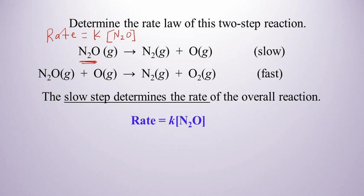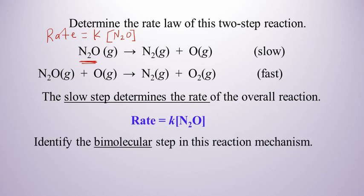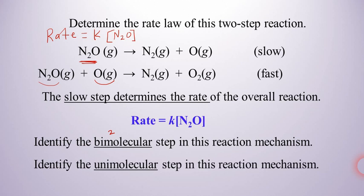As long as you can identify the slow step, you can do this. Now let's identify the bimolecular step in this reaction mechanism. The prefix 'bi' means two, so which of these steps has two molecules reacting? That would be the second step — we have one and two. That is the bimolecular step. The first step is the unimolecular step because there's only one molecule reacting — one molecule basically decomposing in that step.